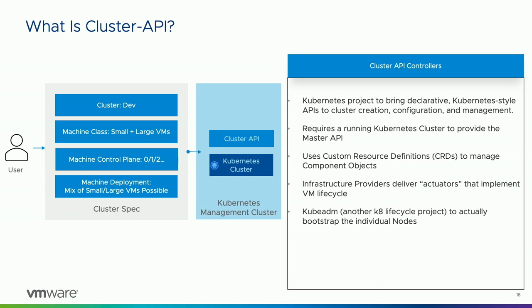Cluster API uses Kubernetes itself. You start out with a bootstrap or management cluster that gives you an API. You have a whole bunch of custom resources or operators that allow you to instantiate a Kubernetes cluster. As a user, I might say 'give me a Kubernetes cluster' — I would get objects created in my bootstrap cluster: a cluster, machine classes, machines, machine deployments. These are just objects holding configuration spec, the desired state. They're not actually creating anything underneath. Then there are providers specific to the infrastructure platform that know how to actually instantiate the cluster.